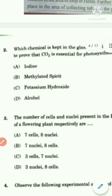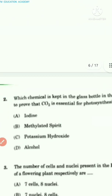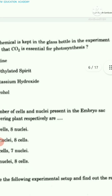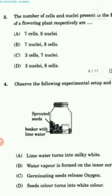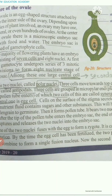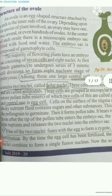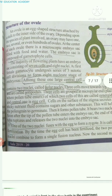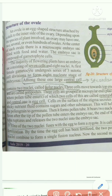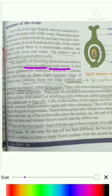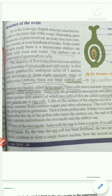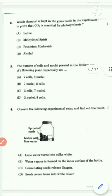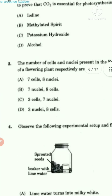The third question asks the number of cells and nuclei present in the embryo sac of a flowering plant. This is covered in the reproduction chapter — specifically under the topic structure of the ovule in the TS-SCRT textbook. The majority of flowering plants have an embryo sac consisting of seven cells and eight nuclei. The answer is Option A: seven cells and eight nuclei.